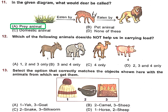Question 12: Which of the following animals does not help us in carrying load? Donkey, elephant, and camel all help in carrying loads. Pig is a farm animal which gives us meat — it is not helpful in carrying any load. So Option C (pig only) is the right answer.